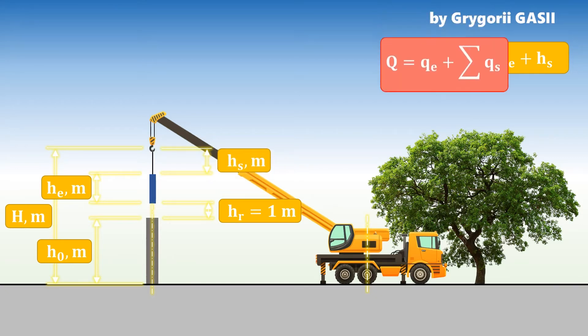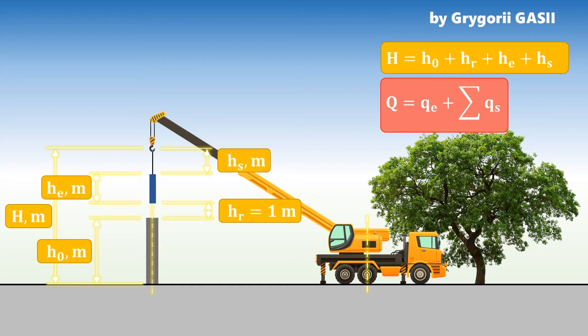The second parameter is load weight to be lifted. Load weight to be lifted consists of the weight of structure and weights of crane slings.